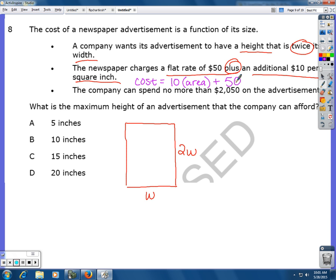The company can spend no more than $2,050 on the advertisement. So for the company, they're going to do $10 times the area, which I'm just going to call X for now. Plus $50.